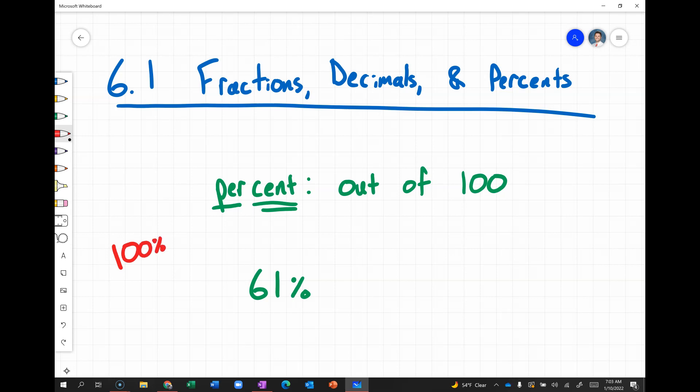And so, when we think about converting between, in particular, decimals and percents, we want to think about that relationship being 100 times as much for a percent. For example, 61% means 61 out of 100. So, if we want to convert that to a decimal, then we just need to divide by 100.